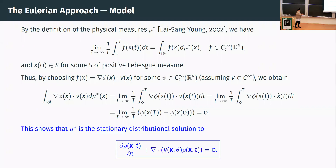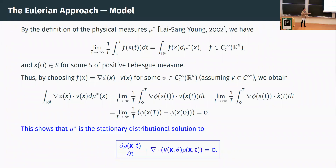More explicitly, this tells us that the physical measure is the stationary distributional solution to the continuity equation. This is different from the relationship between an ODE and the continuity equation on a time scale, because here I don't have the measurement of rho at every time — I only have an approximation at the invariant measure side — and the inverse side is treated as a stationary distributional solution. This gives me a model: whenever I have a candidate v, I can solve the forward problem to get a candidate rho, then compare it to the measured rho from the trajectory to see their differences, giving a feedback loop to update the parameter in the velocity field.